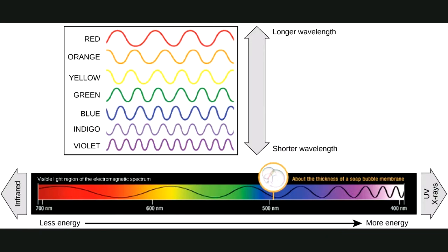This shows the visible region of light. You probably learned ROYGBIV — red, orange, yellow, green, blue, indigo, violet. Light travels in wavelengths: the longer the wavelength, the lower the energy; the shorter the wavelength, the higher the energy. So violet light has the shortest wavelength and highest energy, whereas red has the longest wavelength and the least energy.